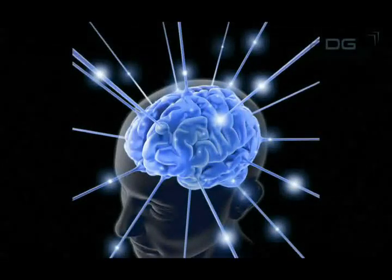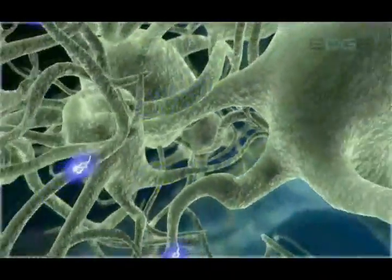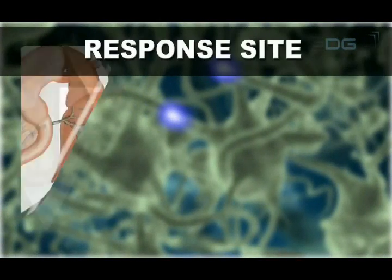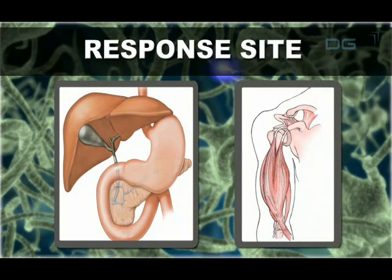The brain then processes this information and sends back the response via electrical impulse to the site where the response is desired. The response site can be anything like the release of a hormone from a gland or relaxation or stretching of a muscle.